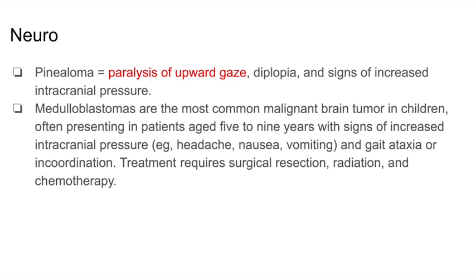The most common malignant brain tumor in children is a medulloblastoma. This is typically seen in children between the ages of 5 to 9 years old. They have signs of increased intracranial pressure such as headache, nausea, and vomiting, as well as gait ataxia or incoordination. You can treat these patients with surgical resection, radiation, and chemotherapy.